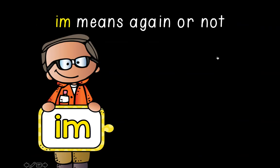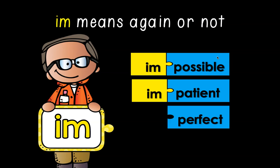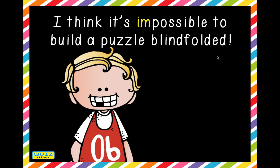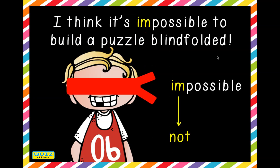Im means not. In most cases it just means not — like impossible meaning not possible, impatient meaning not patient, imperfect meaning not perfect at all. We said today in class that we are all perfectly imperfect and we like it that way — it makes us unique. I think it's impossible, meaning not possible, to build a puzzle blindfolded. Impossible — not gonna happen.